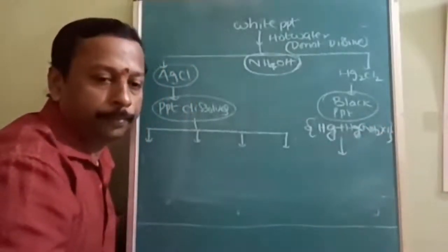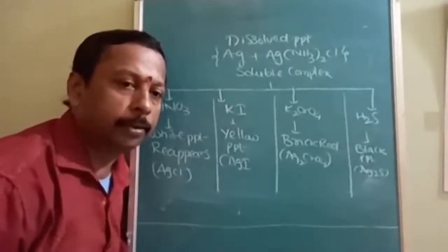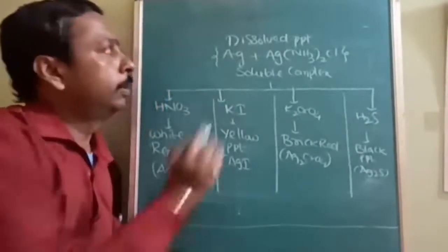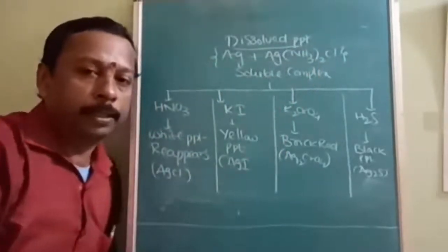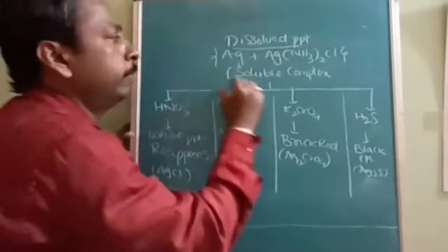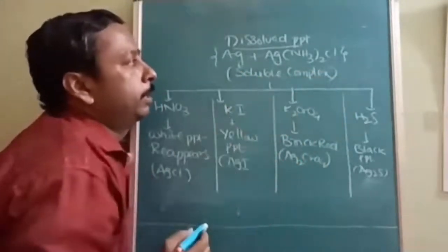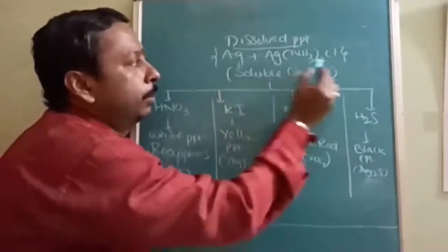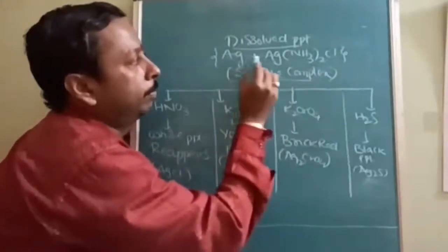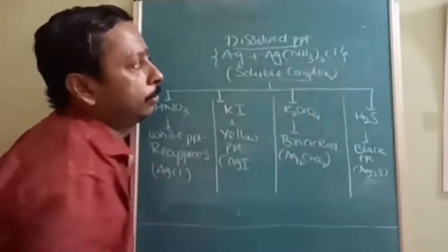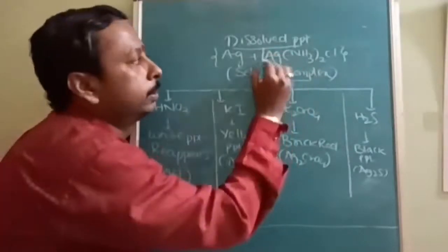The dissolved precipitate from NH₄OH treatment is a soluble complex — ammoniacal silver chloride. This is divided into four parts for the confirmatory tests.